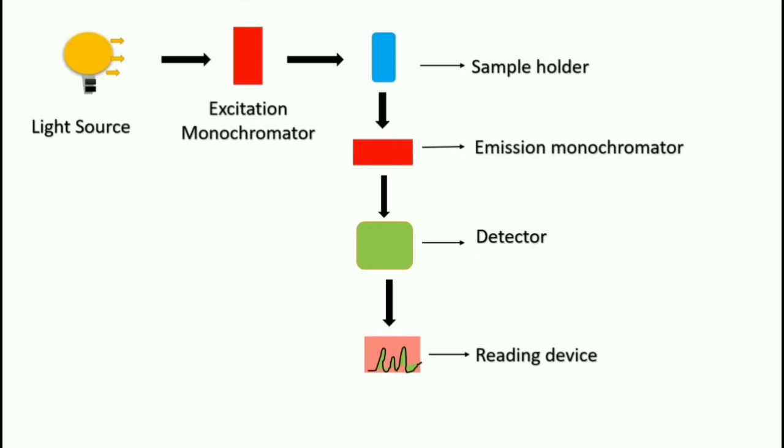From the sample holder, the emitted radiations are then passed to emission monochromator where the emitted radiations from the sample are passed to the detector. The detector then passes electric signals to the reading device or recorder where it is displayed in the form of graphs.